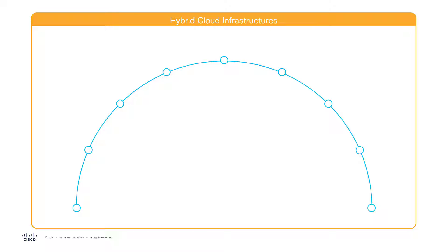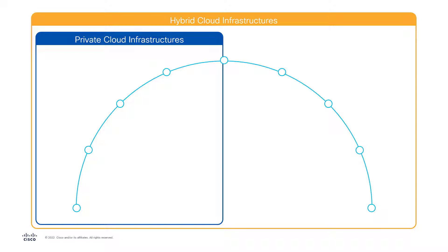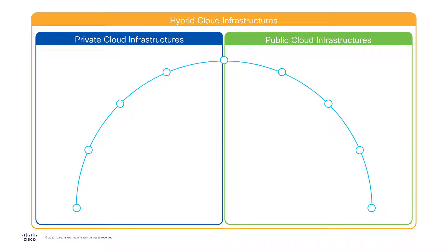Therefore, global data centers today hinge on integration and consistency in operations through the modern hybrid cloud model. Hybrid clouds overcome the limitations of private cloud infrastructure and public cloud infrastructures through complete integration based on modern application programming interfaces, or APIs. APIs enable communication between different systems through a standardized interface that merges the private and public resources into one complete hybrid solution when properly implemented.